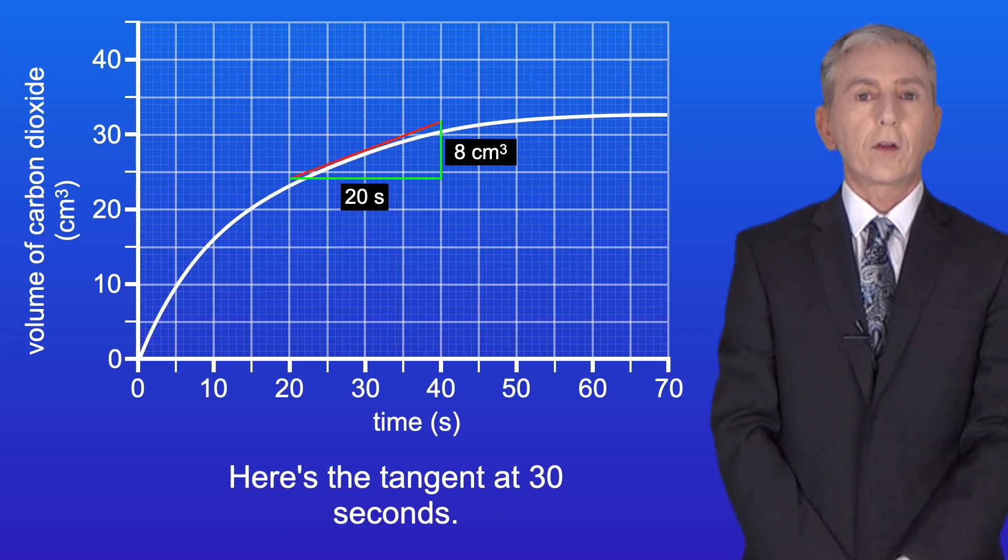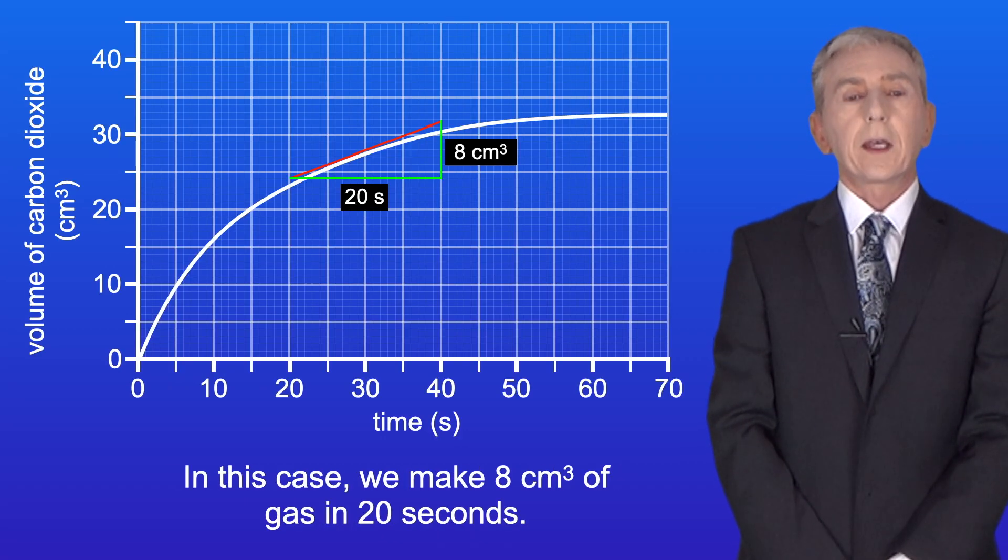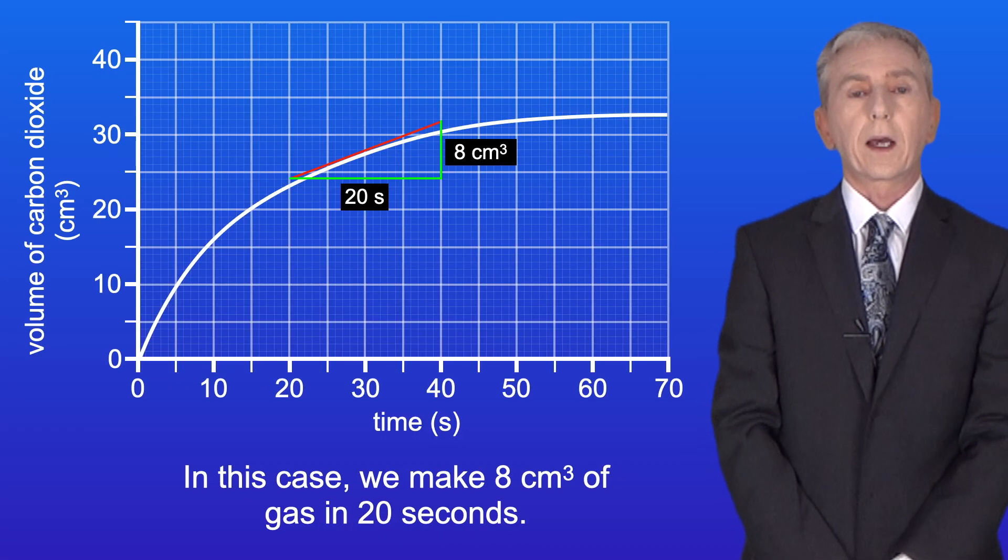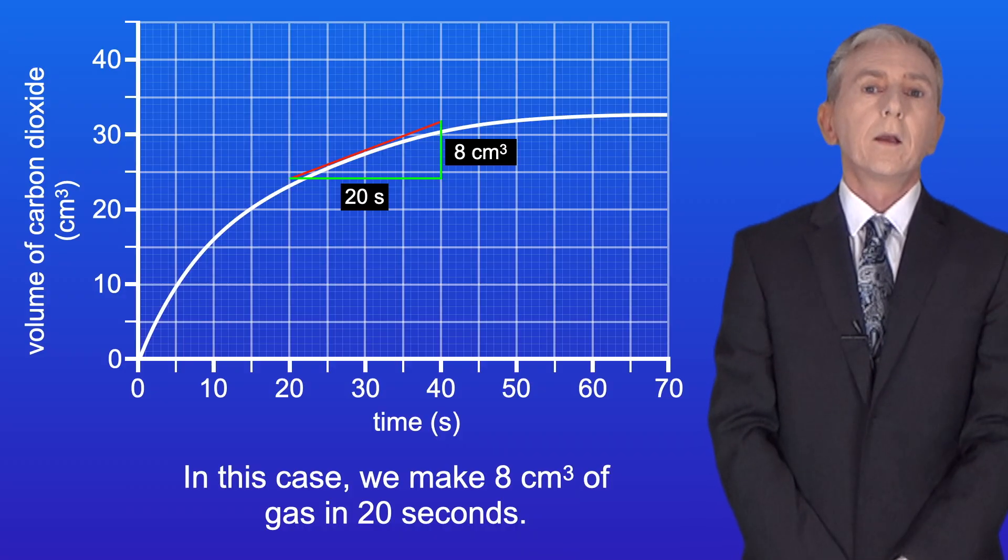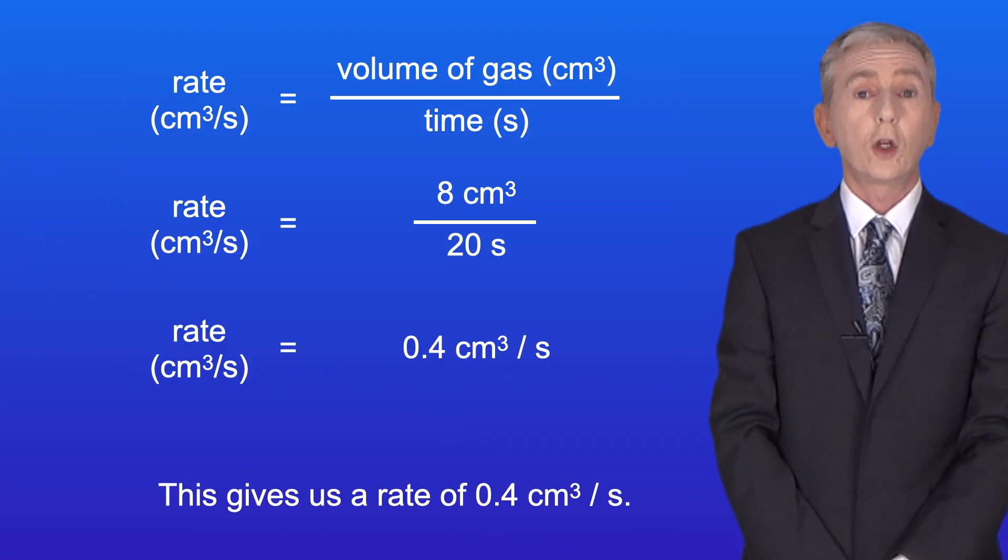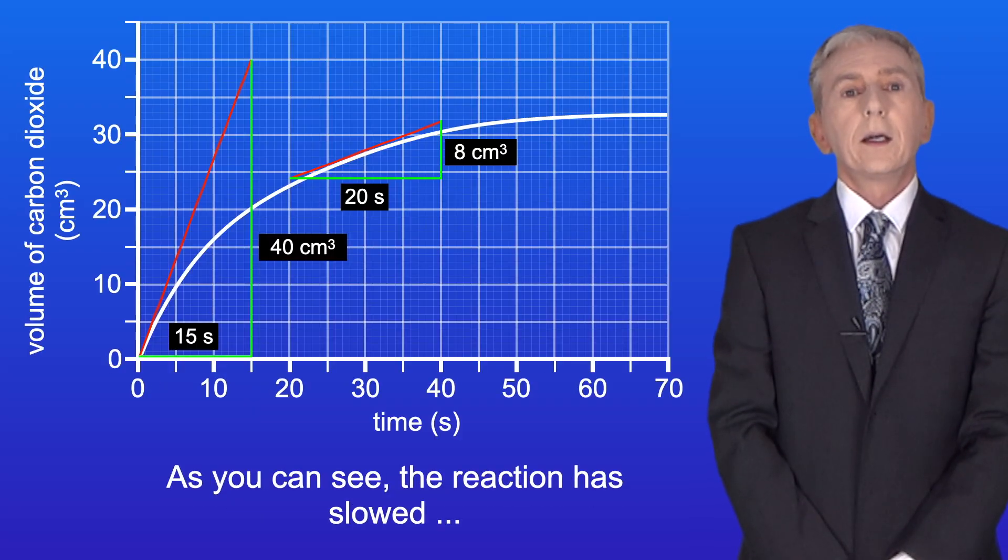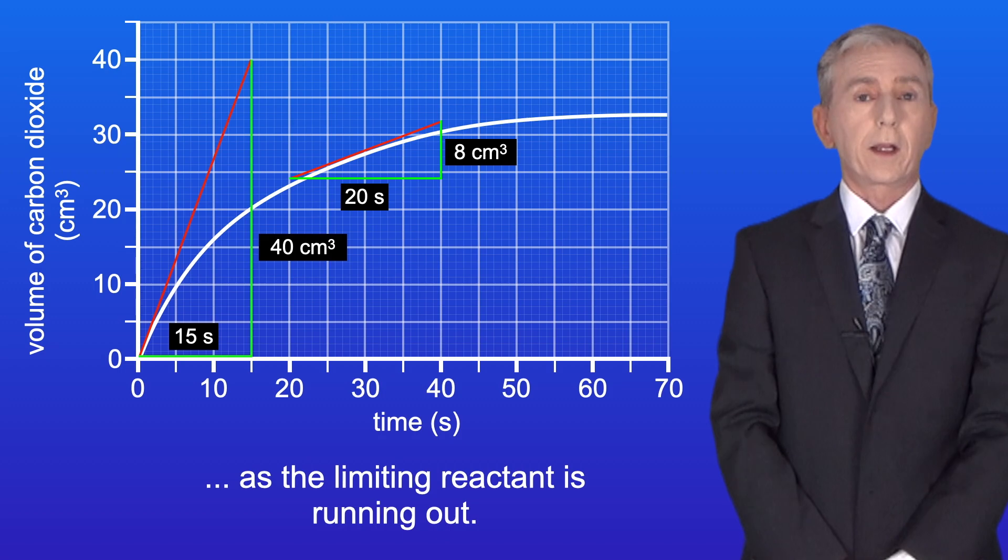Here's the tangent at 30 seconds. In this case we make 8 centimeters cubed of gas in 20 seconds. So this gives us a rate of 0.4 centimeters cubed per second. As you can see the reaction has slowed as the limiting reactant is running out.